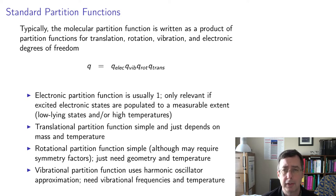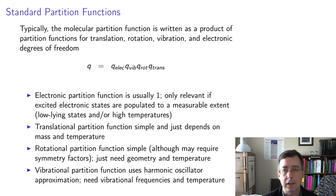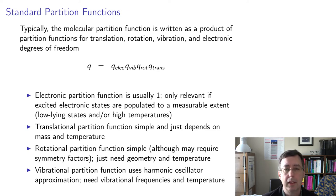The electronic partition function is usually very simple — normally just one. At normal temperatures, we only have enough thermal energy to populate the lowest electronic state. The excited electronic states have energies so high that when you put them in the exponent minus epsilon over k_B T, that contribution is basically zero. Only the ground state contributes, and if we define the ground state energy as zero, then e to the minus zero over k_B T is one. We'd only adjust this for an unusual situation, like a really low-lying excited electronic state.